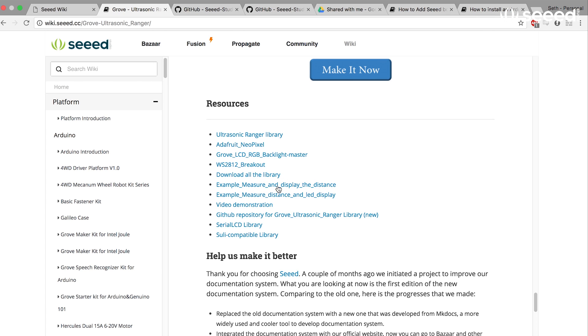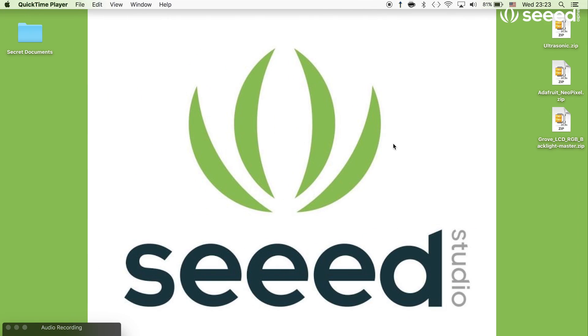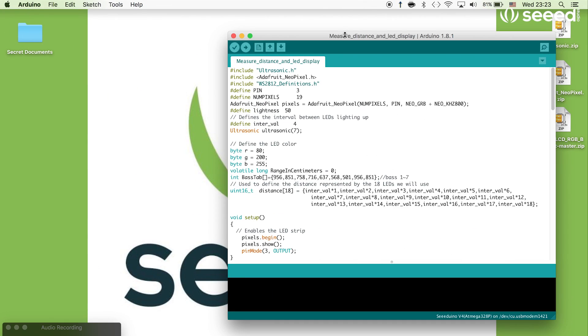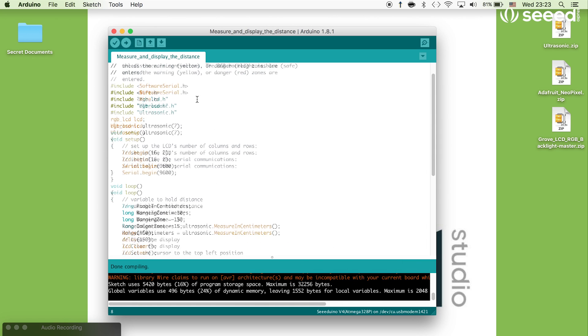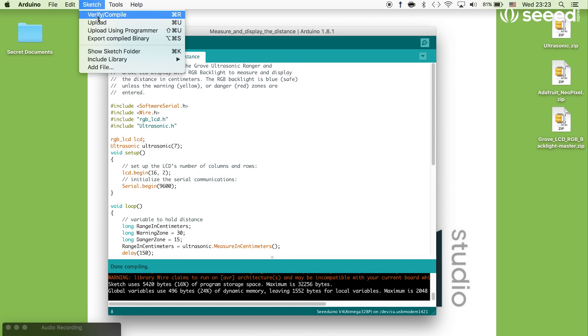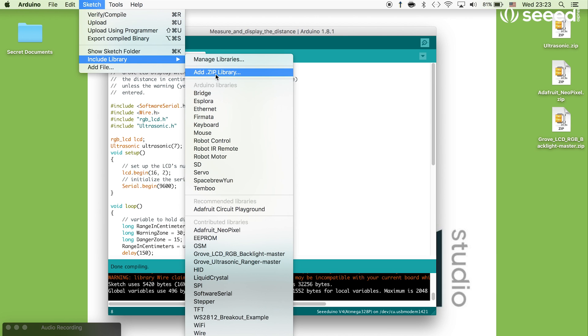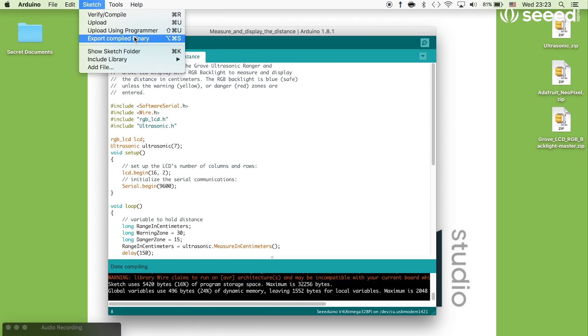Make sure you download the example measure and display the distance as well as example measure distance in the LED display as those are both we're going over this video. Once you have those downloaded, you can actually open them up in Arduino. This is measure the distance and LED display. We will actually show you how to add a library really quickly. Sketch, include library, add a zip library, and then you can navigate and include one of these libraries. You can also see if you have them already installed down here.